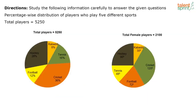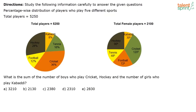Now the next question is on a pie chart. Study the following information carefully to answer the given questions: percentage distribution of players who play 5 different sports. It is given the total players in one graph and total female players in another. Let us look at the first question.